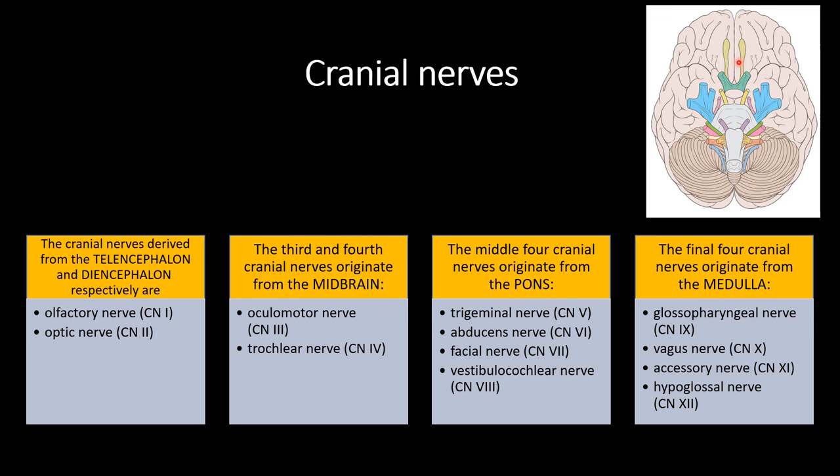There are 12 pairs of cranial nerves, of which the first and second — that is olfactory and optic nerve — arise from the telencephalon and diencephalon respectively. Whereas the third and fourth cranial nerves, that is the oculomotor and the trochlear nerve, arise from the midbrain. The middle four cranial nerves — 5, 6, 7 and 8 — originate from the pons, whereas the last four cranial nerves — 9, 10, 11 and 12 — originate from the medulla.